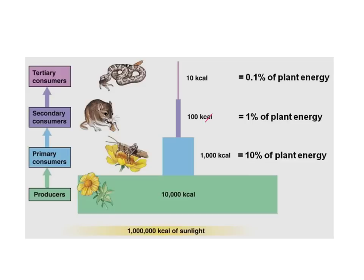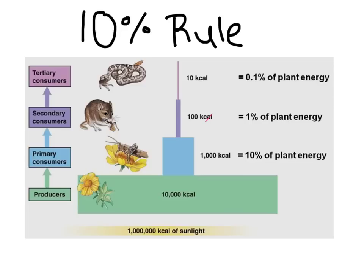Biologists refer to this concept as the 10% rule. It states that generally, only 10% of available energy makes it from one trophic level to the next trophic level, and then 10% to the next, and then 10% to the next.